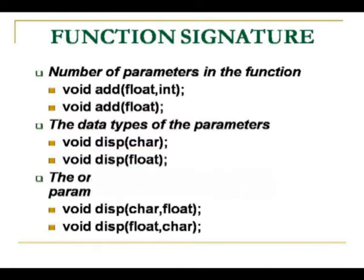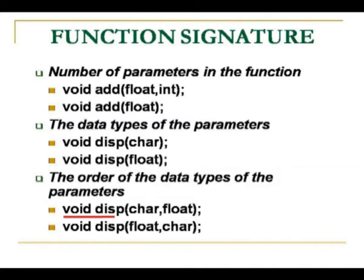Next you have the order of the data types of the parameters, the orders in which they are arranged. Here again, the two functions have the same name disp, they have the same number of arguments. And if you see both the arguments are of the same type, but the order in which they are arranged is different.